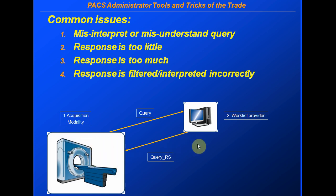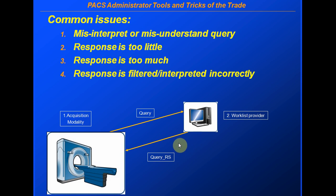Last but not least, the response might be filtered and interpreted incorrectly. For example, I need the CT exams that are supposed to be performed on the inpatient radiology CT, but I get everything back including from all the outpatients and another three clinics. That means it's not filtered correctly — I ask in my request for only the worklist entries for my inpatient but I get way too much back. Incorrect interpretation at the database, or filtered incorrectly at the receiver side, so I don't get a complete match on my screen.